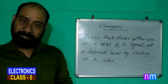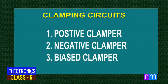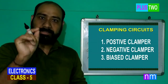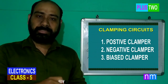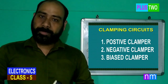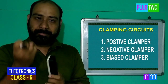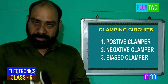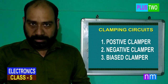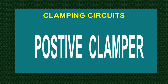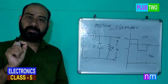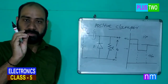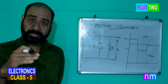There are three types of clampers: the first is the positive clamper, the second is the negative clamper, and the third is the biased clamper. Now let's talk about the positive clamper.